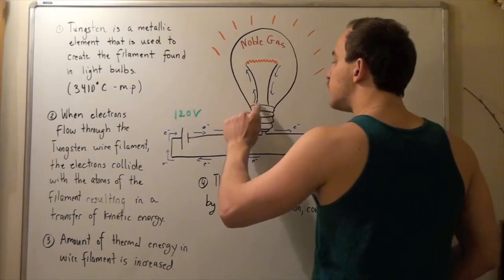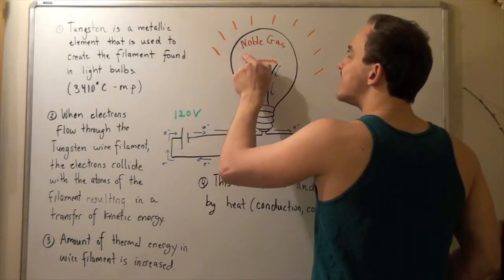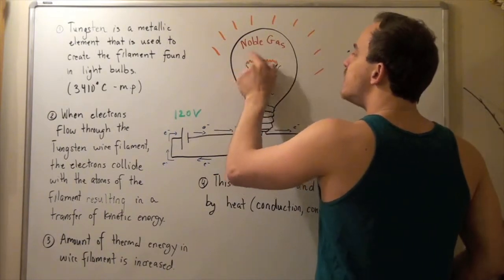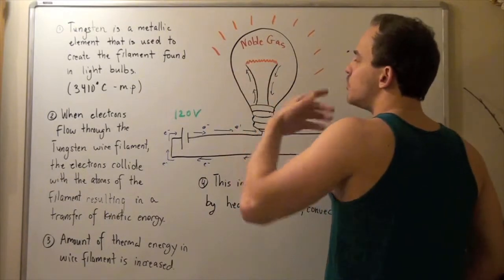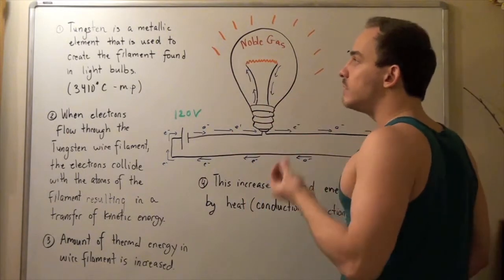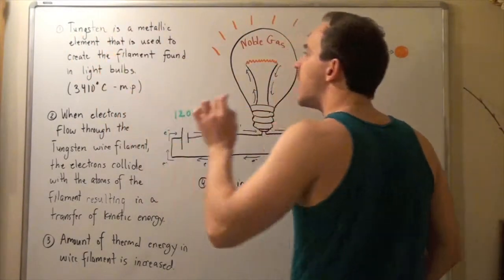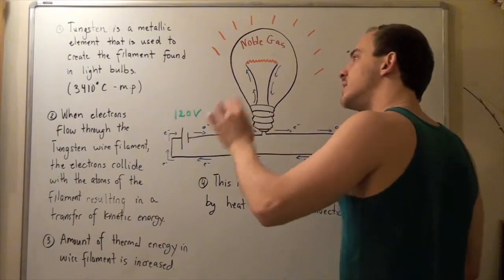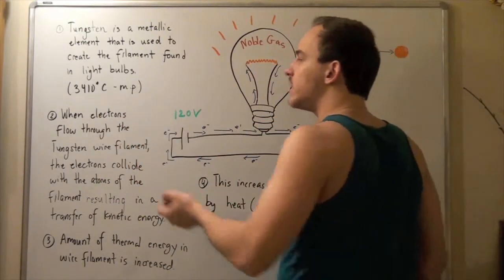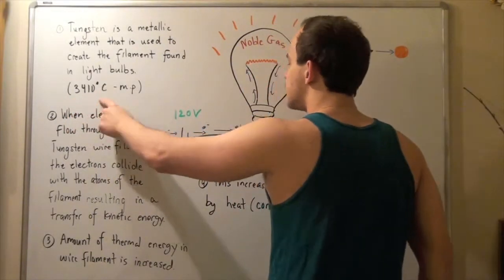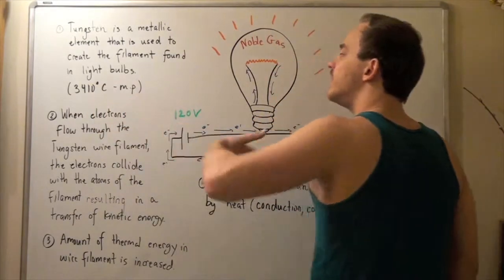Within the light bulb, electrons travel along this circuit, along this metal and into this special metal. This is called the filament, or the wire filament, of our light bulb. Usually, our filament is composed of an element known as tungsten, which is a metallic element. We use tungsten because it has a relatively high melting point — 3,410 degrees Celsius. We'll see in a moment why a high melting point is required.